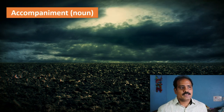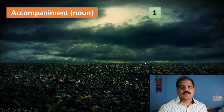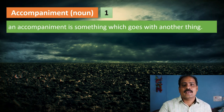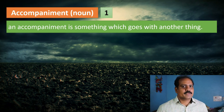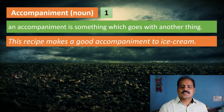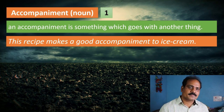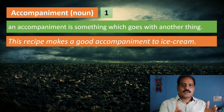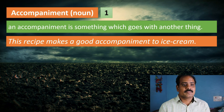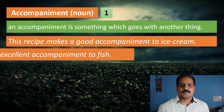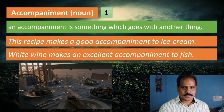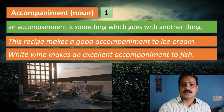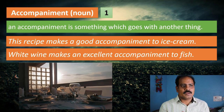Now let's look at the noun form: accompaniment. An accompaniment is something that goes well with another thing — they act as a combination. For example: 'This recipe makes a good accompaniment to ice cream' — meaning they go together perfectly. Another example: 'White wine makes an excellent accompaniment to fish' — same meaning; they are a perfect combination.